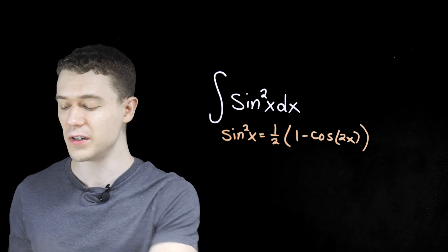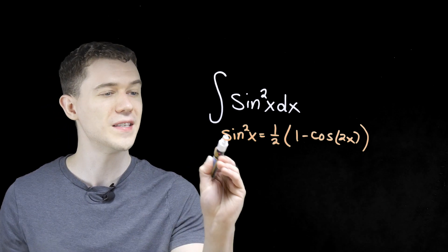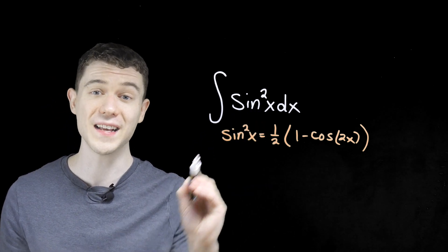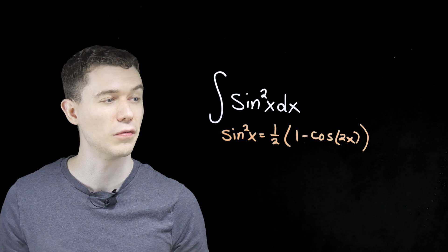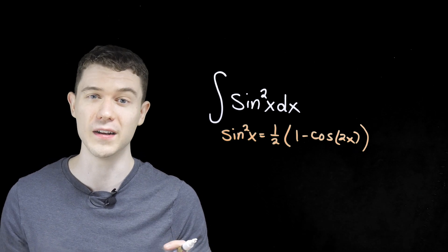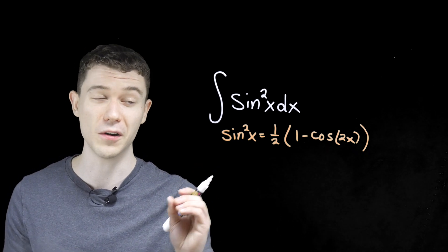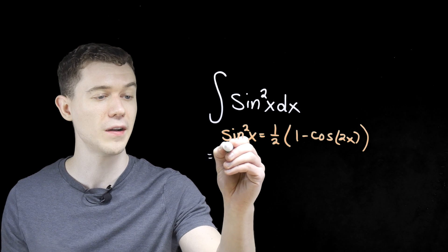So we'll take advantage of this, because when we use this identity, we're taking that squared and breaking it down to a first power. It's a cosine, but those are things we know how to integrate.